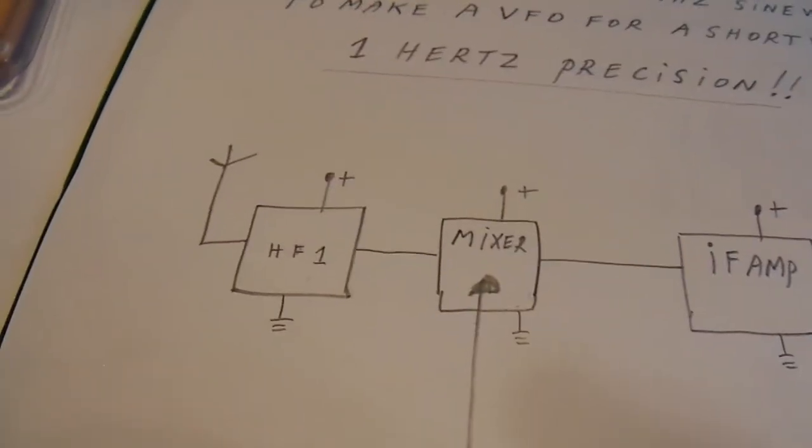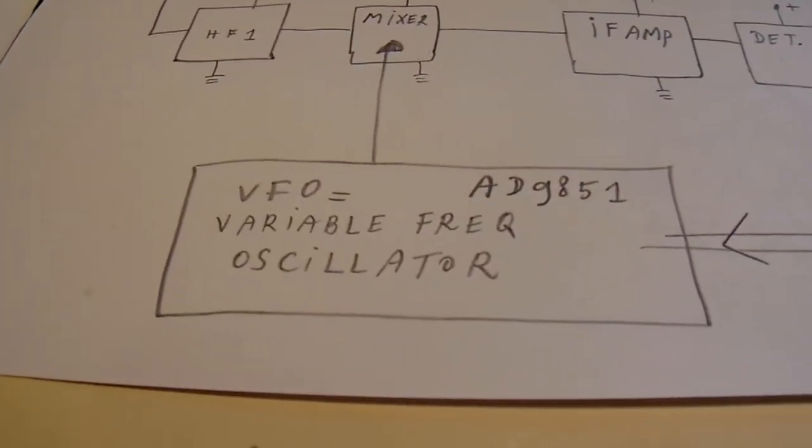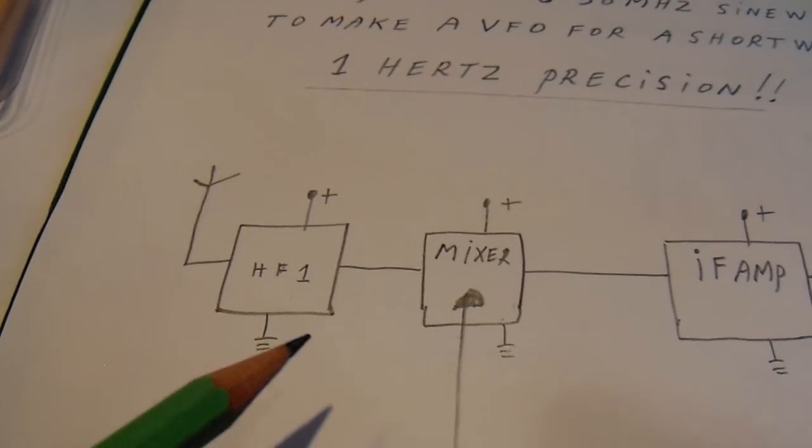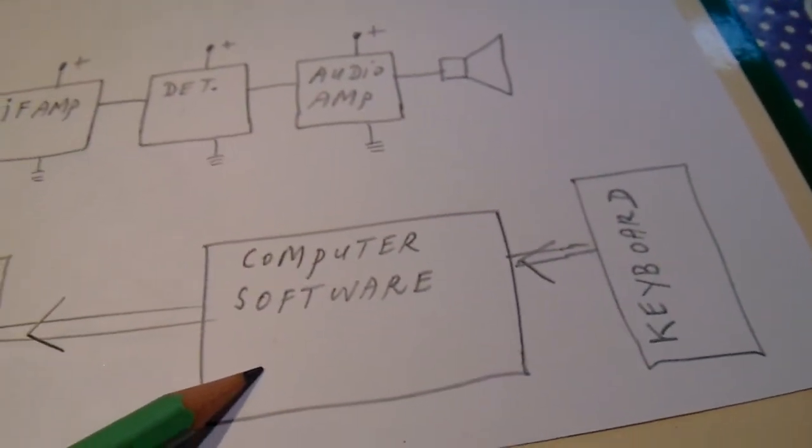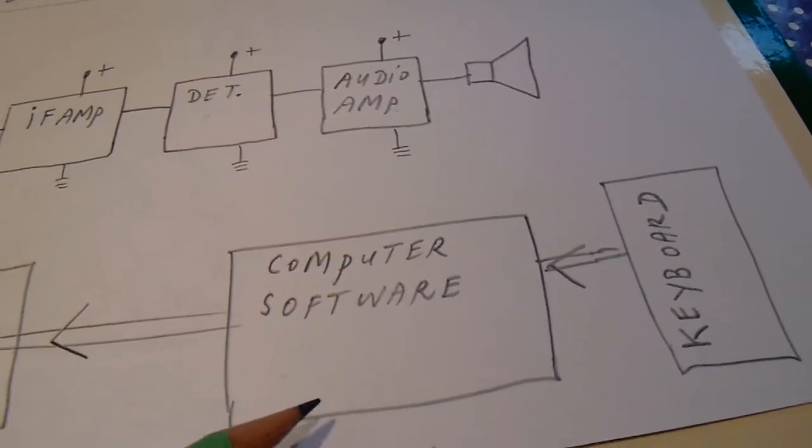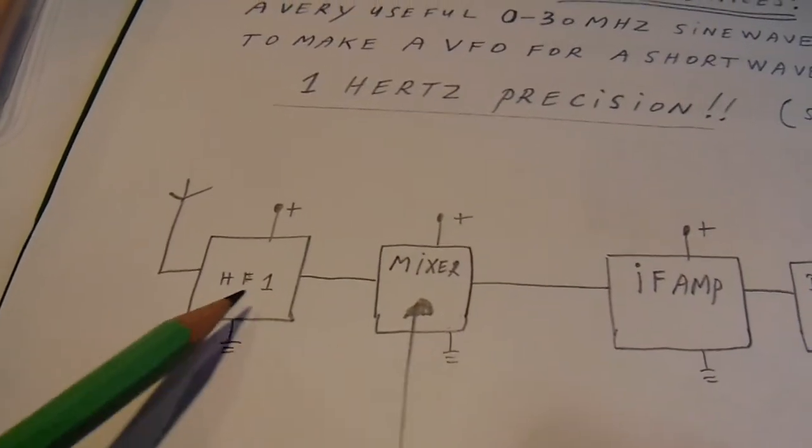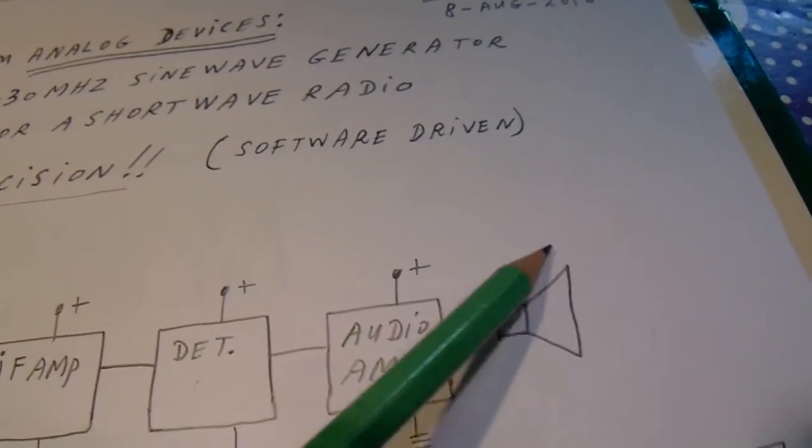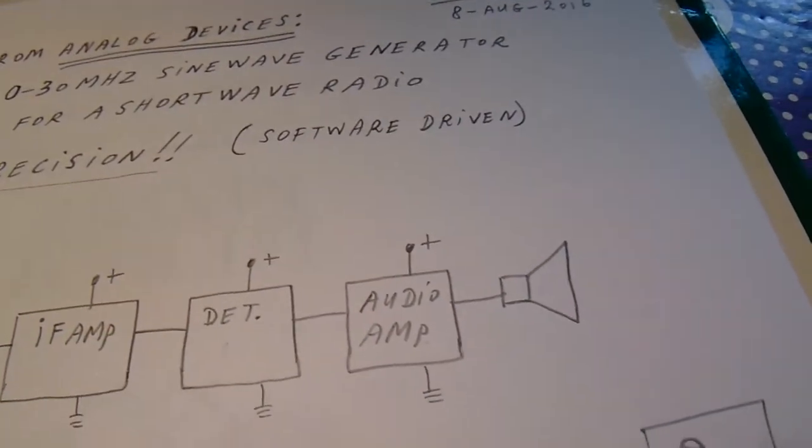But anyway, this is a very good option to make a very precise shortwave radio that you can drive by software on the screen from your computer. You can set a certain frequency, send it into the VFO, and in the mixer, and hear at the end through the loudspeaker whether there is a radio station available on that frequency.